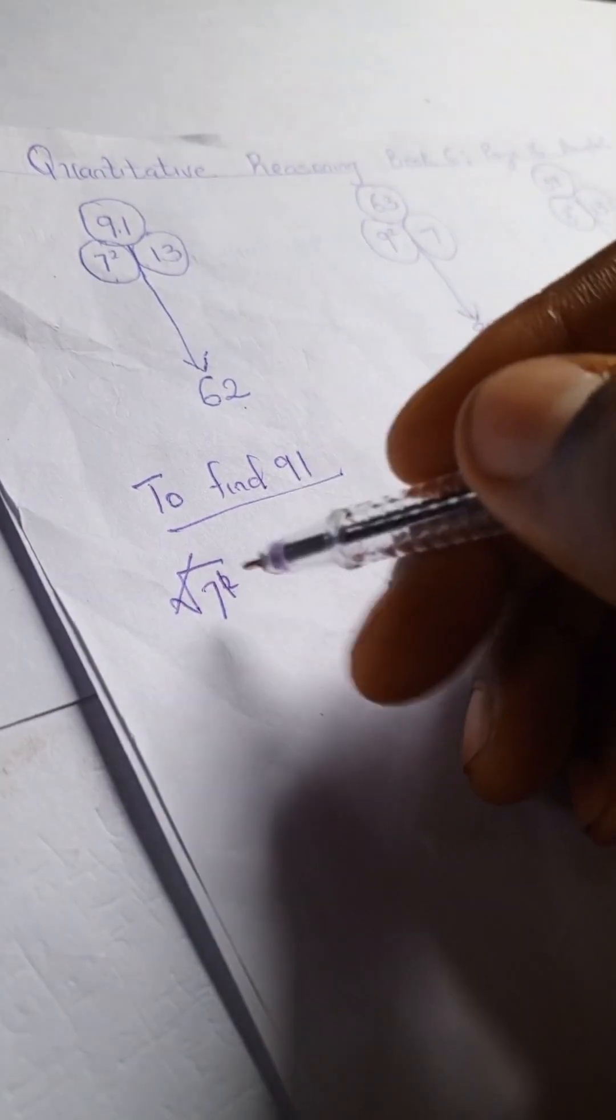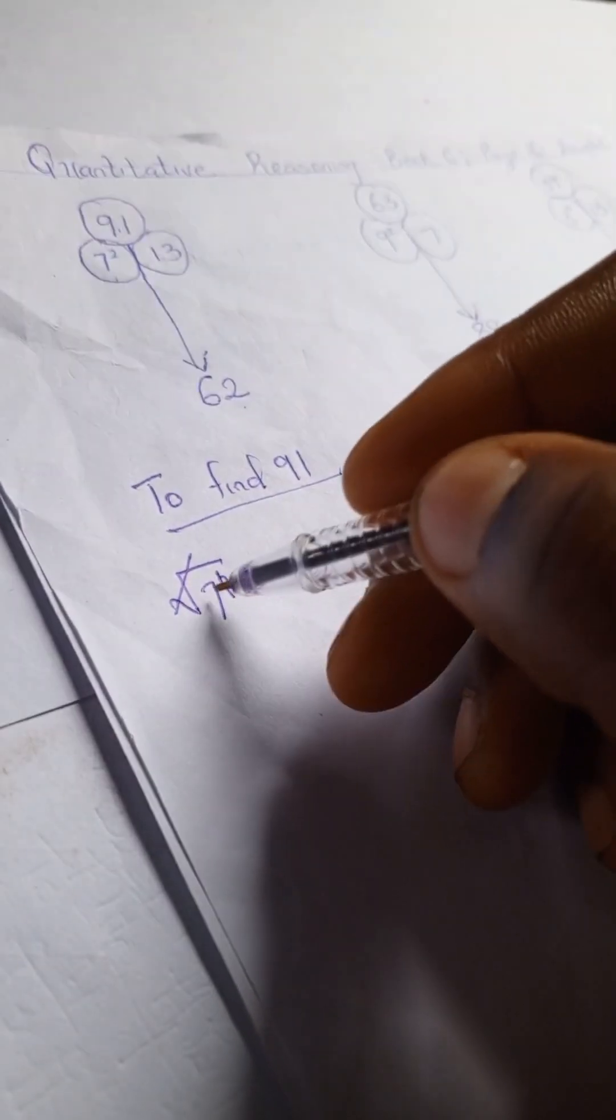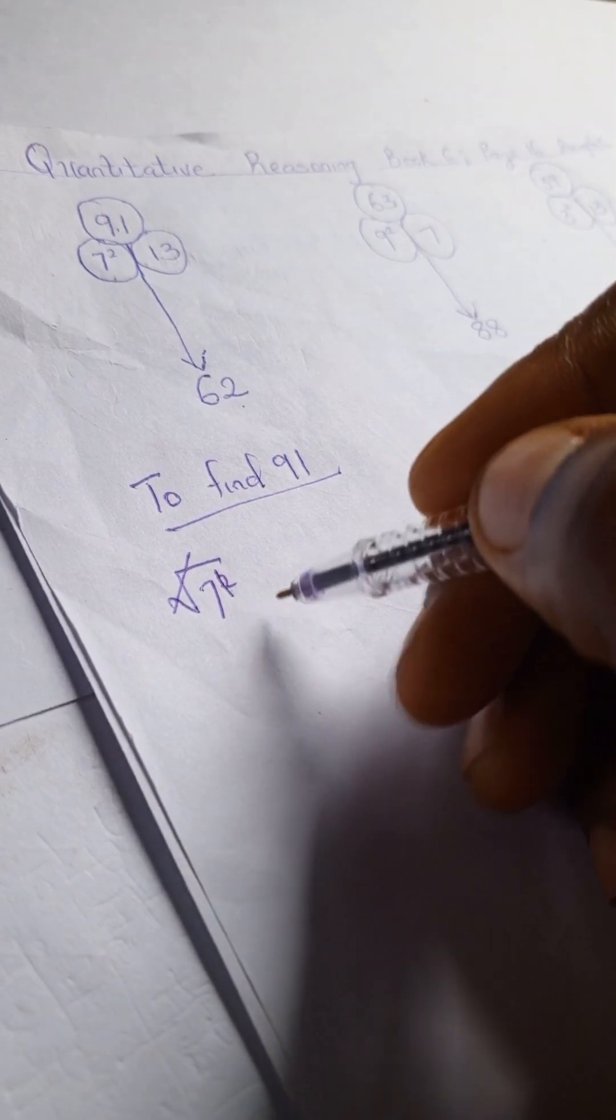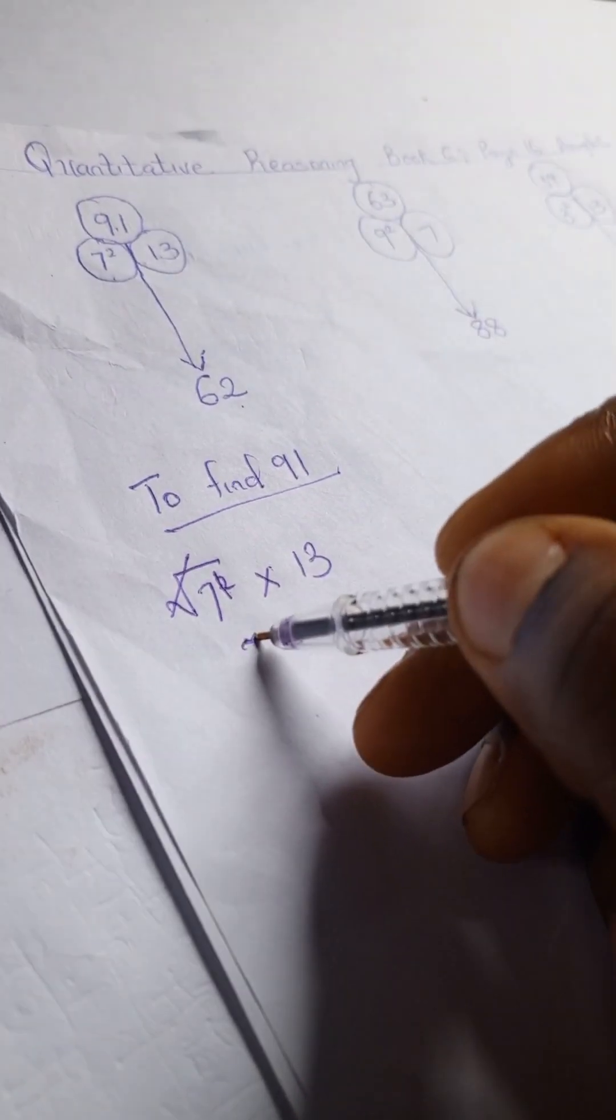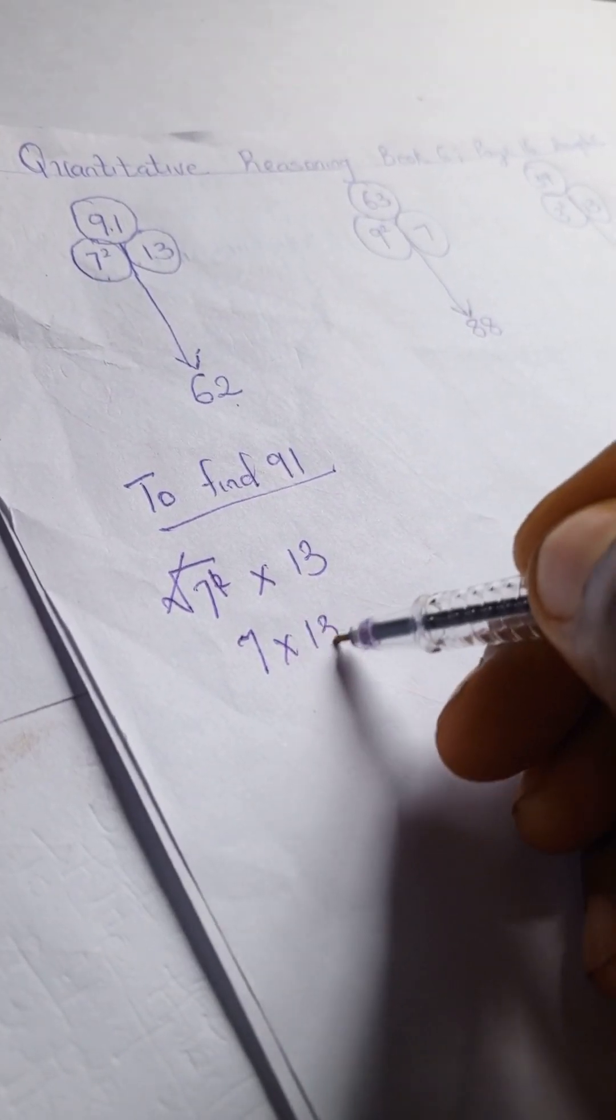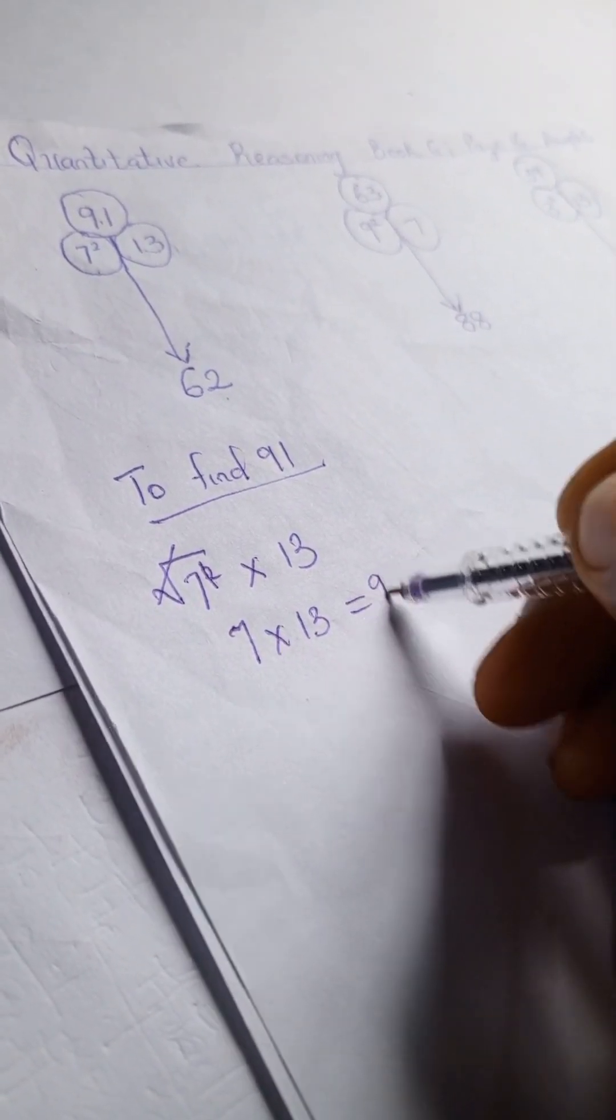So square root of 7 squared times 13. So here we have our 7 left times our 13, and that will give us 91.